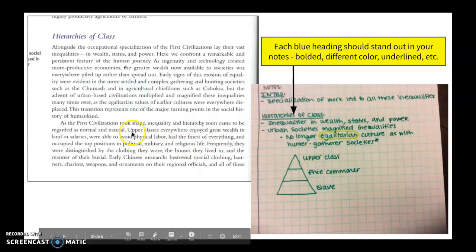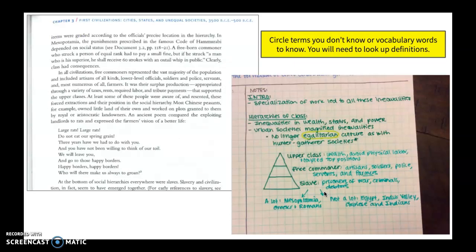And so I saw here that they were going to talk about the upper class. They were also going to, as I flip to the next page, talk about what's called a free commoner and a slave. So these are my three groups. In history, we also want to be able to give examples. And so here I'm going to give examples of what does it look like to be a part of the upper class, a free commoner, and a slave.